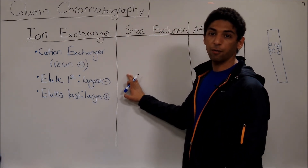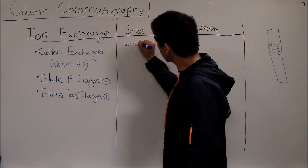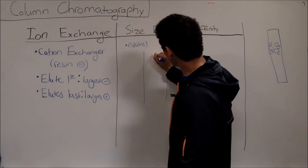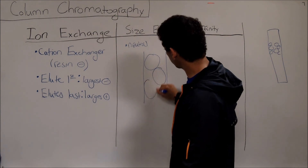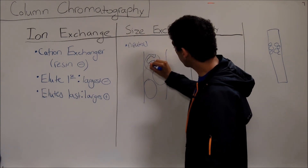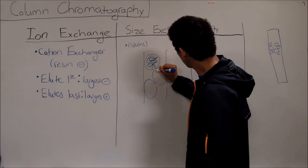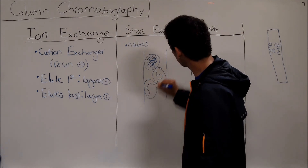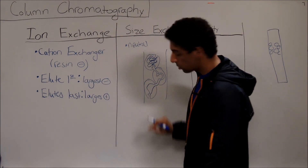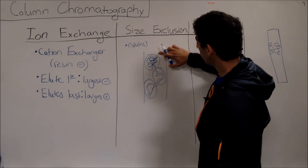The next big one is size exclusion chromatography. The resin is no longer charged — it's neutral. But what it does have is a maze-like path going through it. I'm going to draw it enlarged just so you can see it. The resin makes a really long convoluted path. When you pour in your solution from the top, the small molecules that fit inside of this path will follow it down.